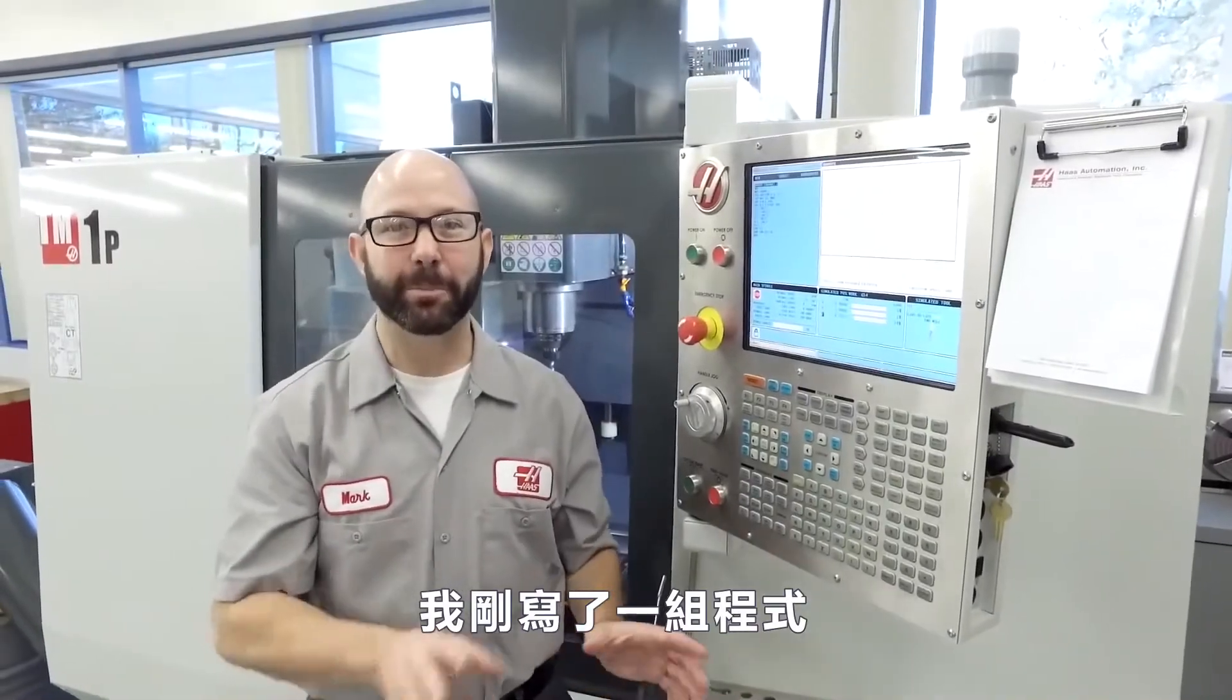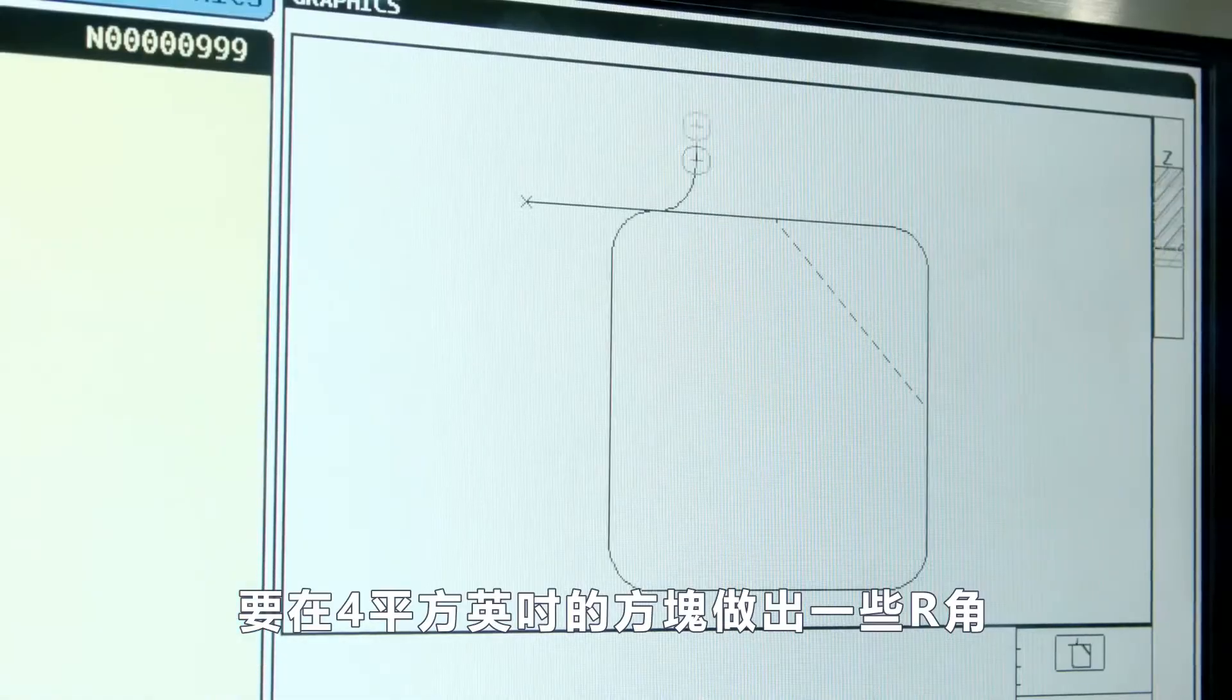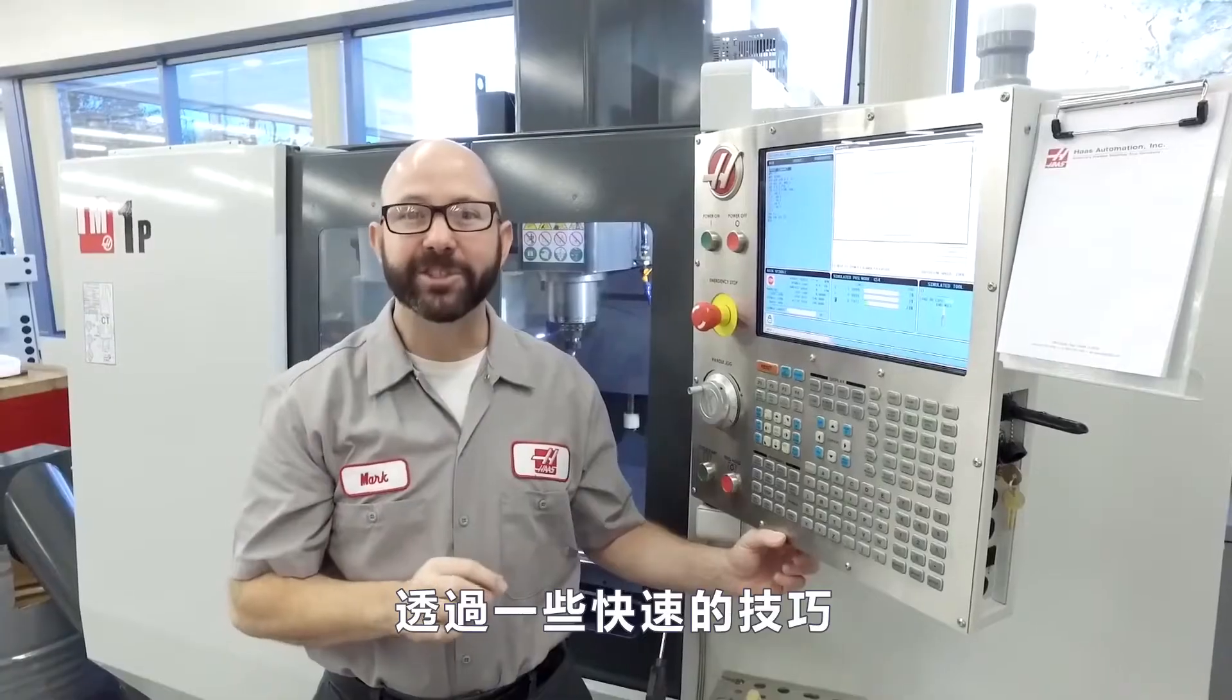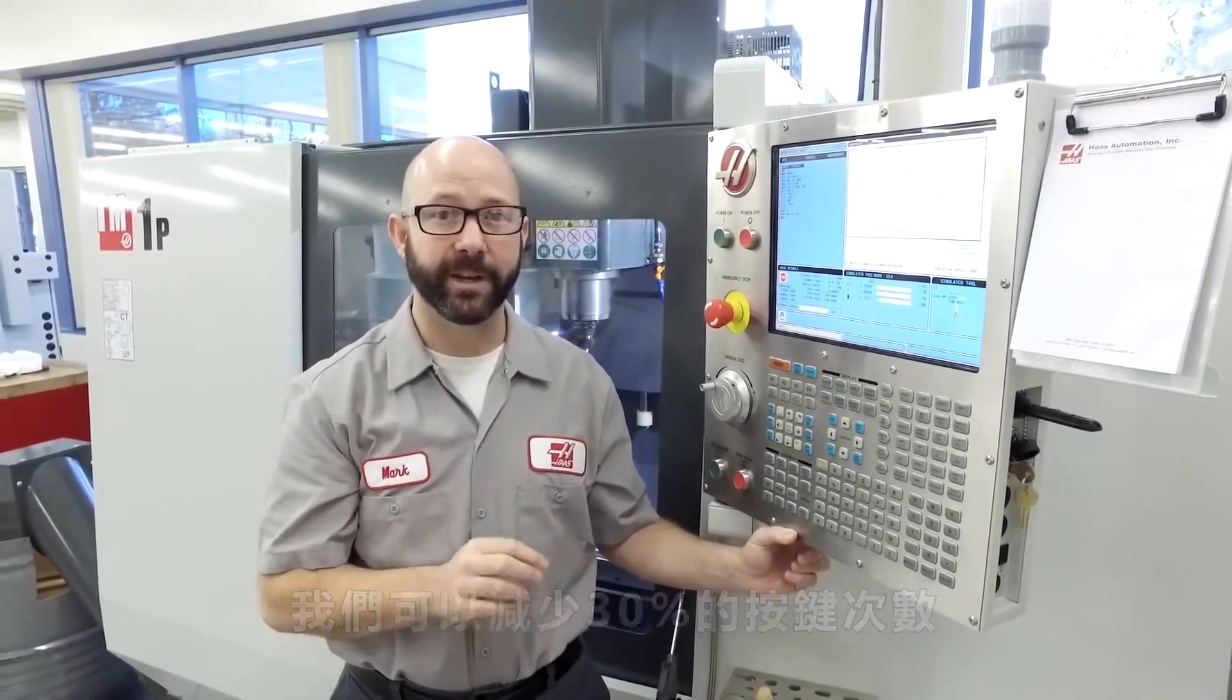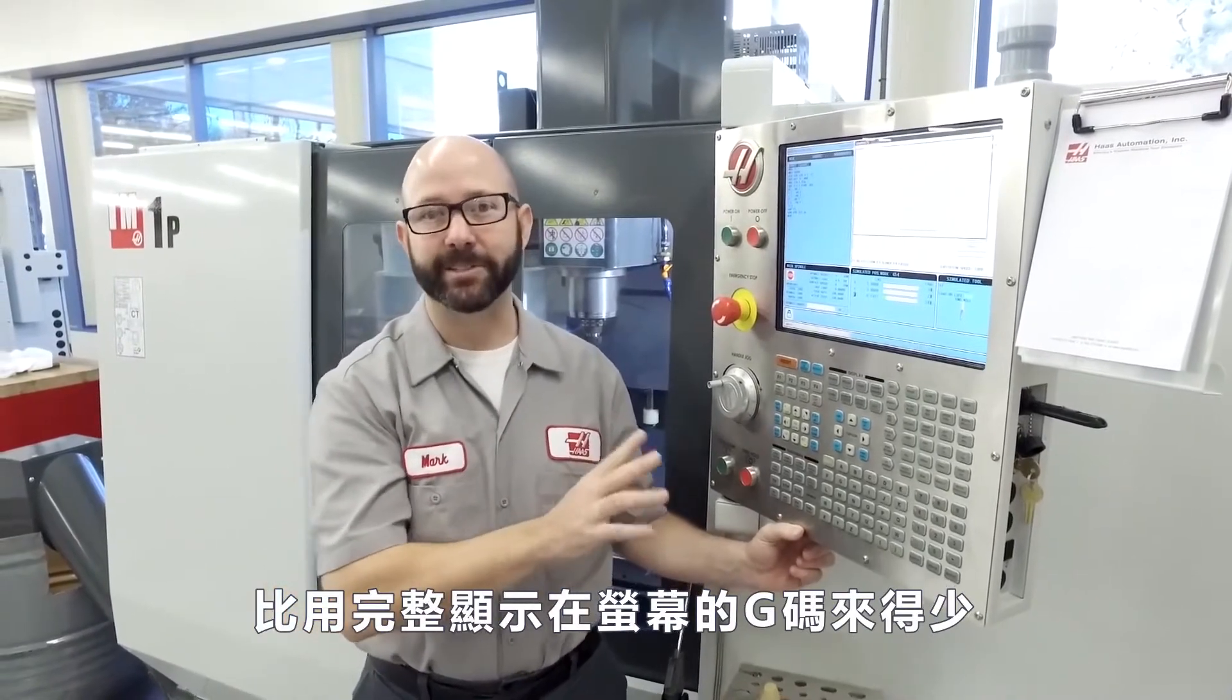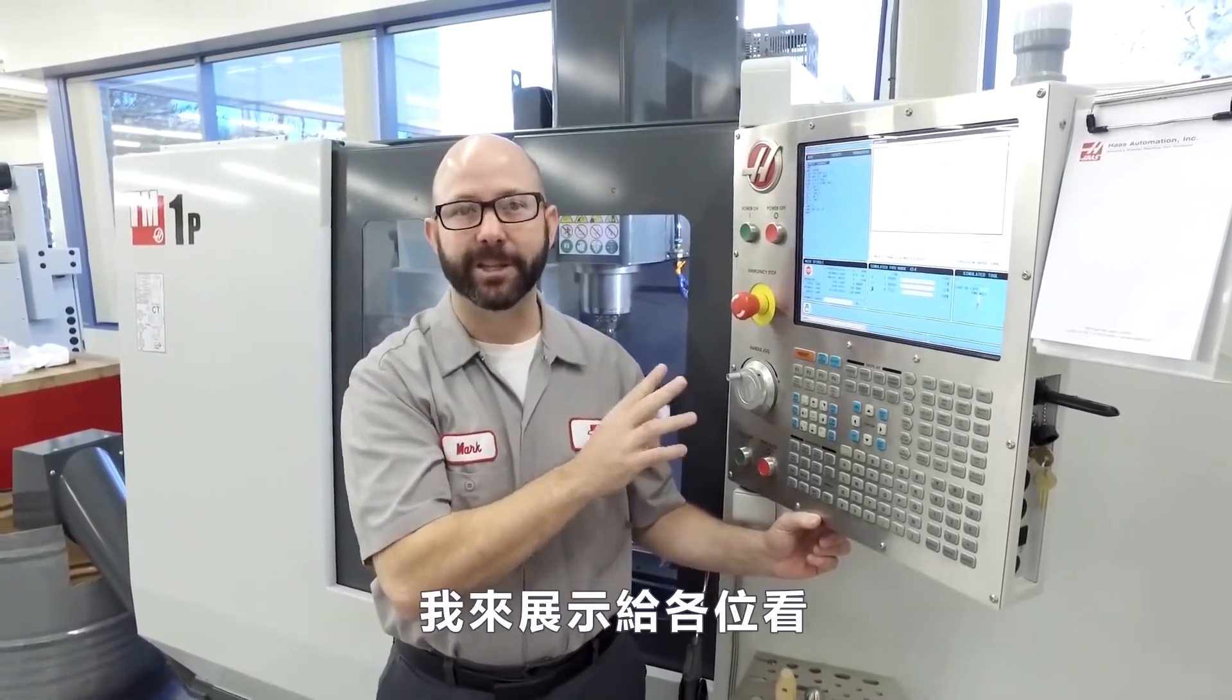Now I've just written a program that mills a 4 inch square block with some corner radius. By using some creative shorthand, we used 30% fewer keystrokes than if we entered the G code exactly as it appears on our screen. Let's show you how we did it.